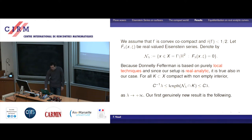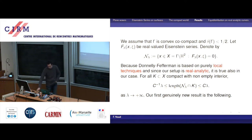We take a convex cocompact surface, assume that the Hausdorff dimension of the limit set is small, and look at the real value of the Eisenstein series. We denote by N_lambda the nodal set — as shown in the pictures before. The first remark is that Donnelly–Fefferman is no big deal here, because there are infinitely many nodal domains. You have to restrict to a compact set; otherwise you don't know how to make sense of it.